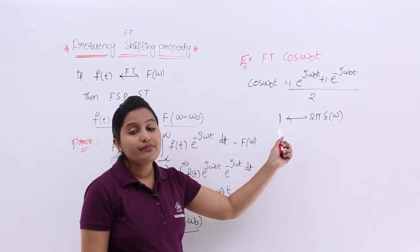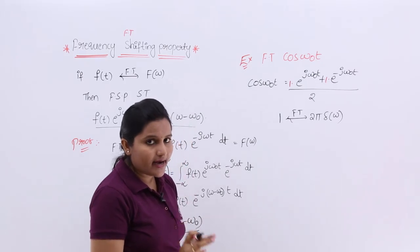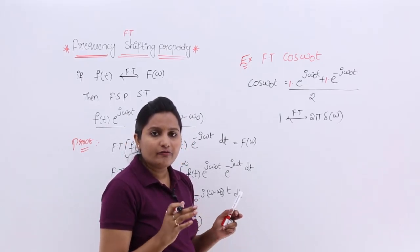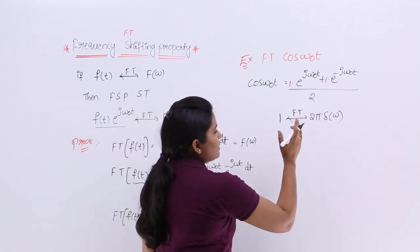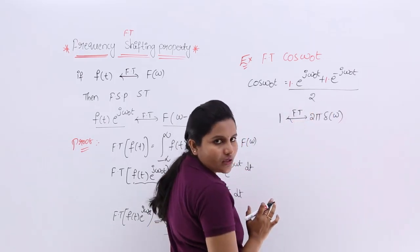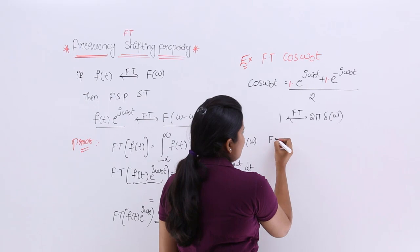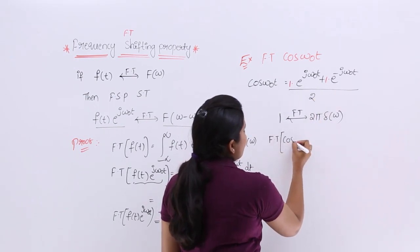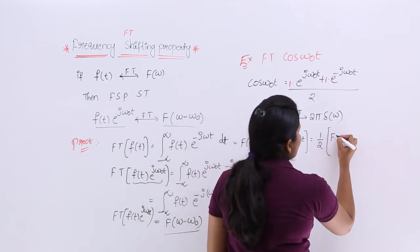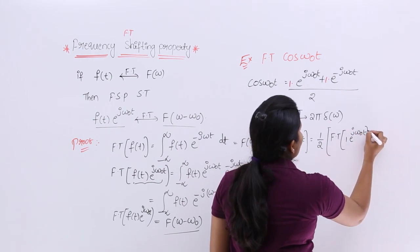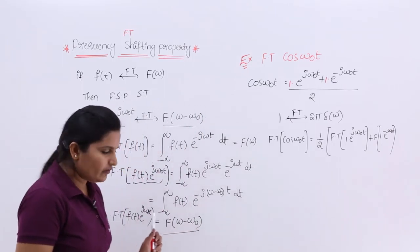From the duality property, the Fourier transform of 1 is 2π·δ(ω) — this is a standard shortcut formula. So taking the Fourier transform on both sides, the Fourier transform of cos(ω₀t) equals (1/2) times: Fourier transform of 1·e^(jω₀t) plus Fourier transform of 1·e^(-jω₀t). Here you can apply the frequency shifting property, since multiplying by an exponential means shifting in frequency.